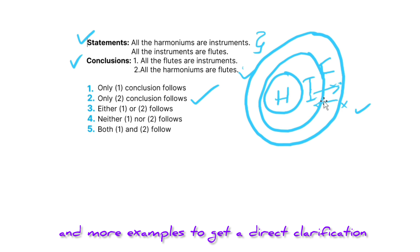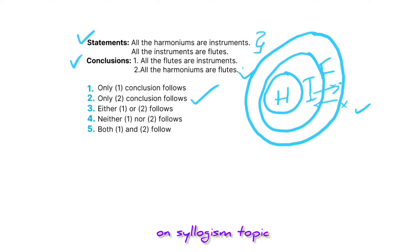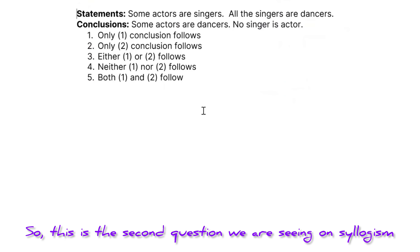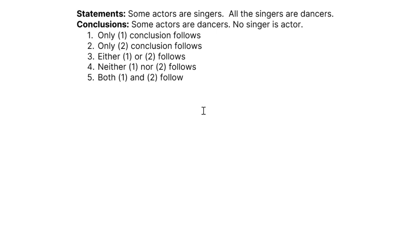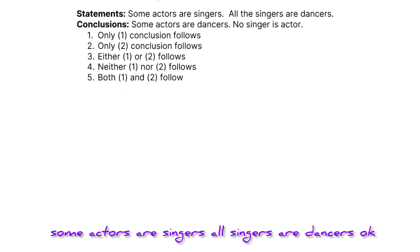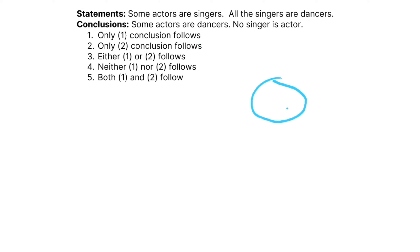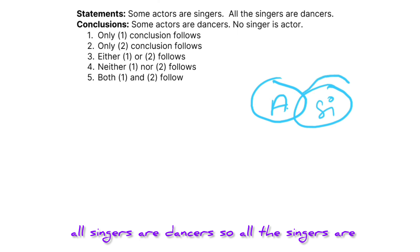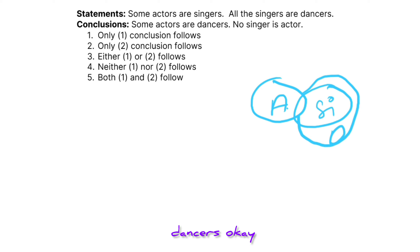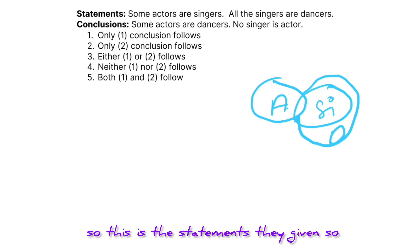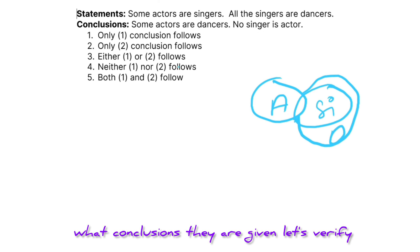I hope you're clear with this simple example. Let's discuss more examples to get direct clarification on the syllogism topic. The second question: the statements are — some actors are singers, and all singers are dancers. Let's draw this: some actors are singers, and all the singers are dancers.